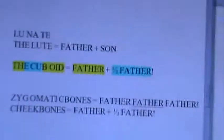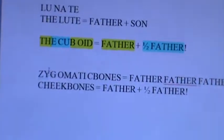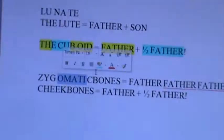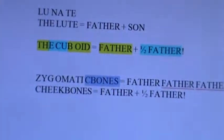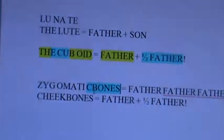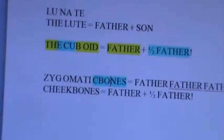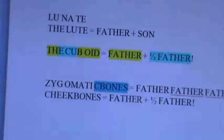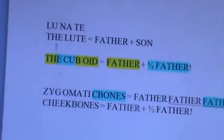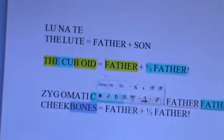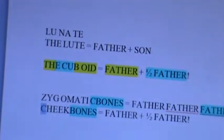So, remember from zygomatic bones — this was father, father, father, in order. And father gets the last syllable; bones goes to father, we know that. But bones plus a C equals father, perfectly. And that's exactly what you see in cheekbones — bones plus the front C equals father.